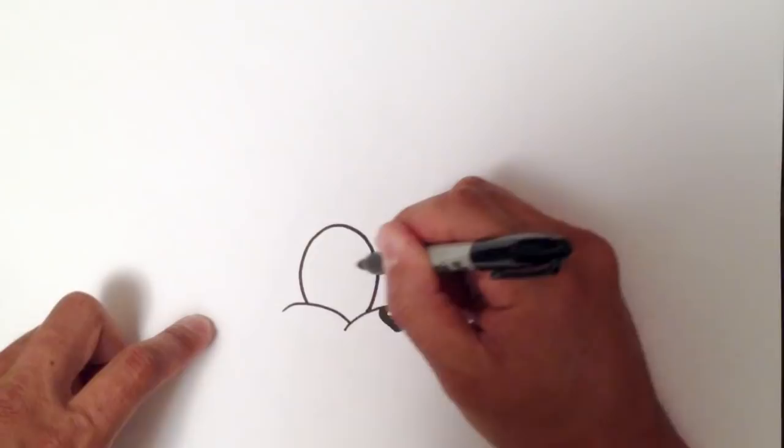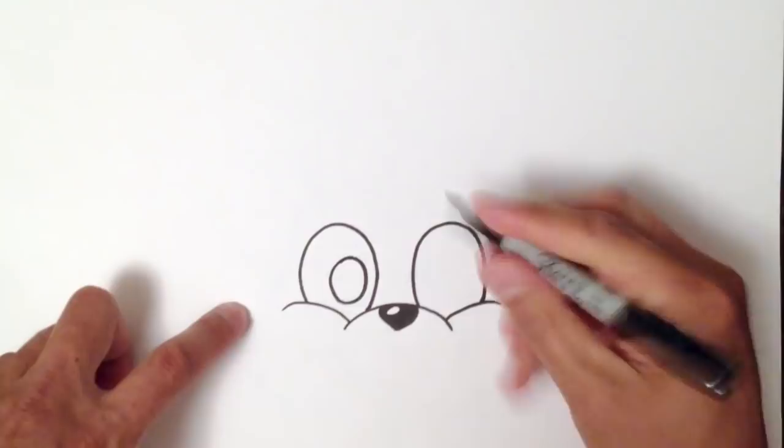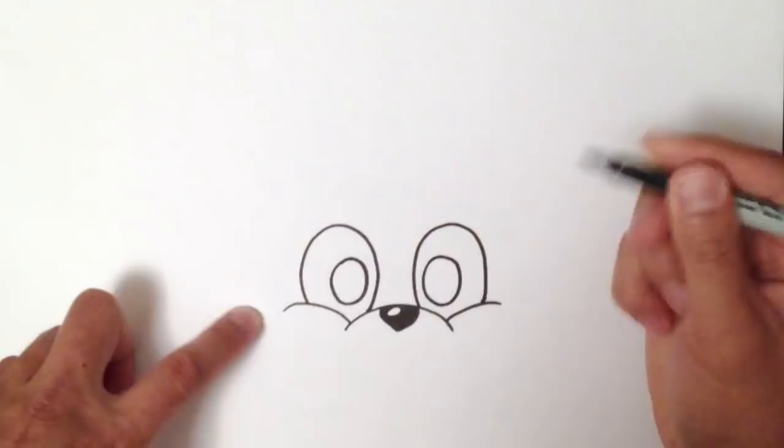And I'll draw the pupil. So I'm going to draw a smaller circle inside. It's a little bit longer than a circle, a little bit higher than a circle. More like an egg shape.